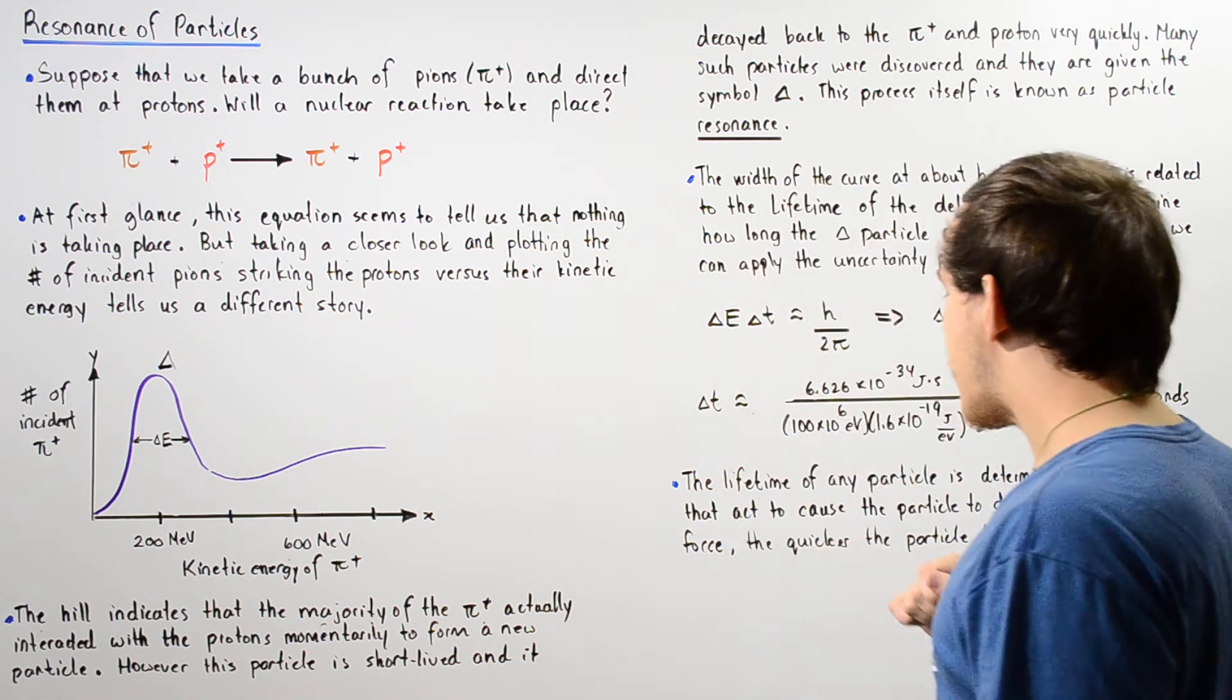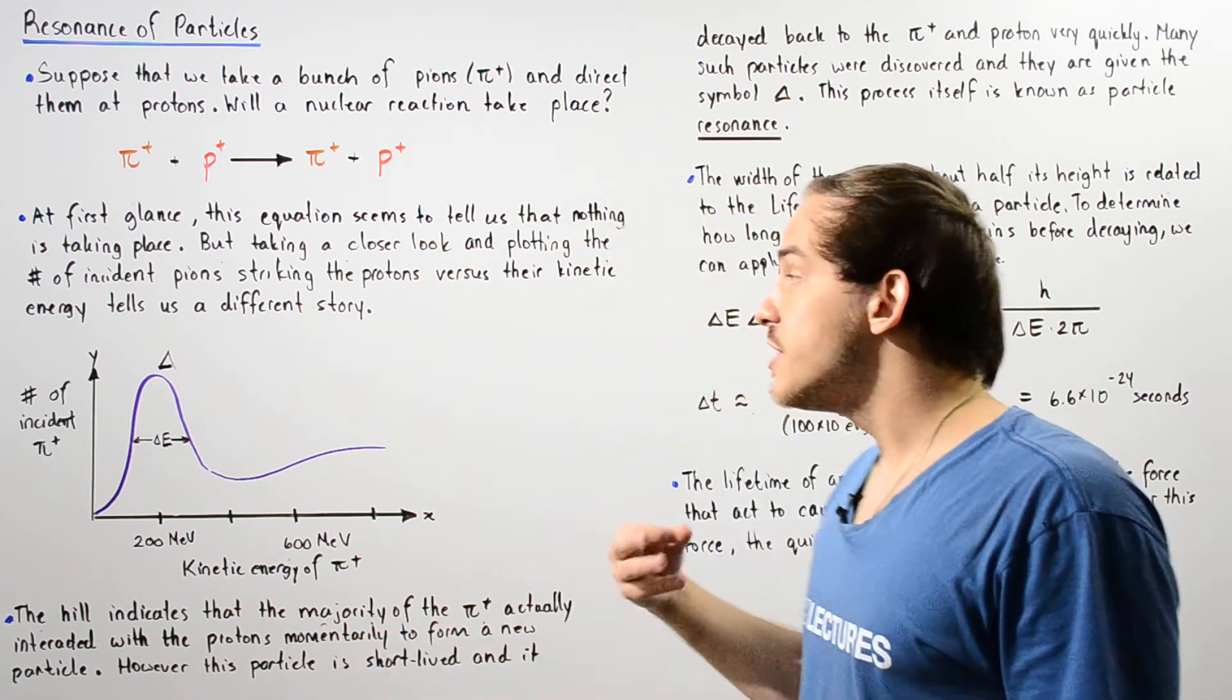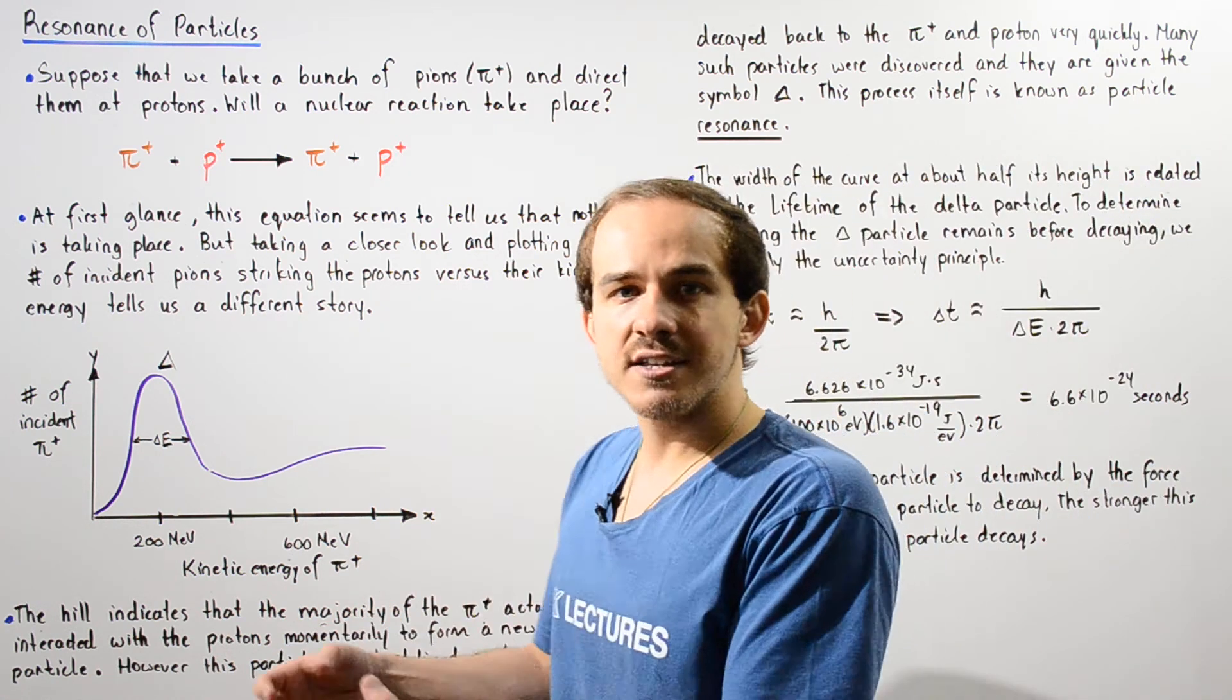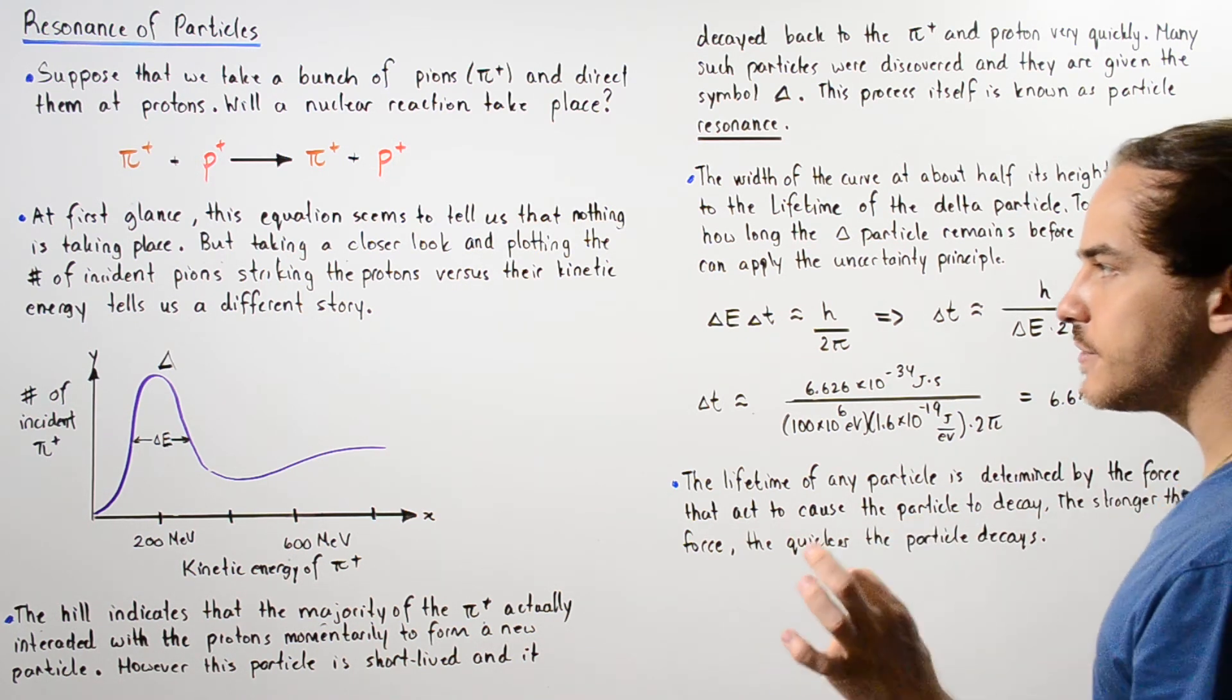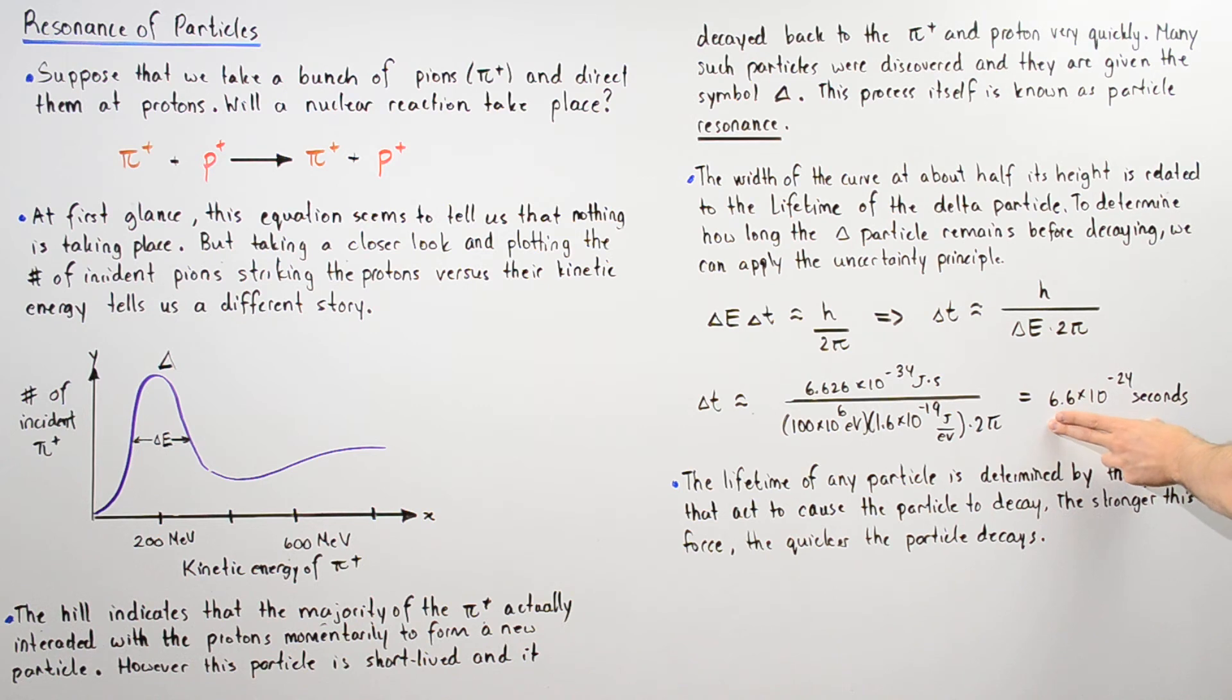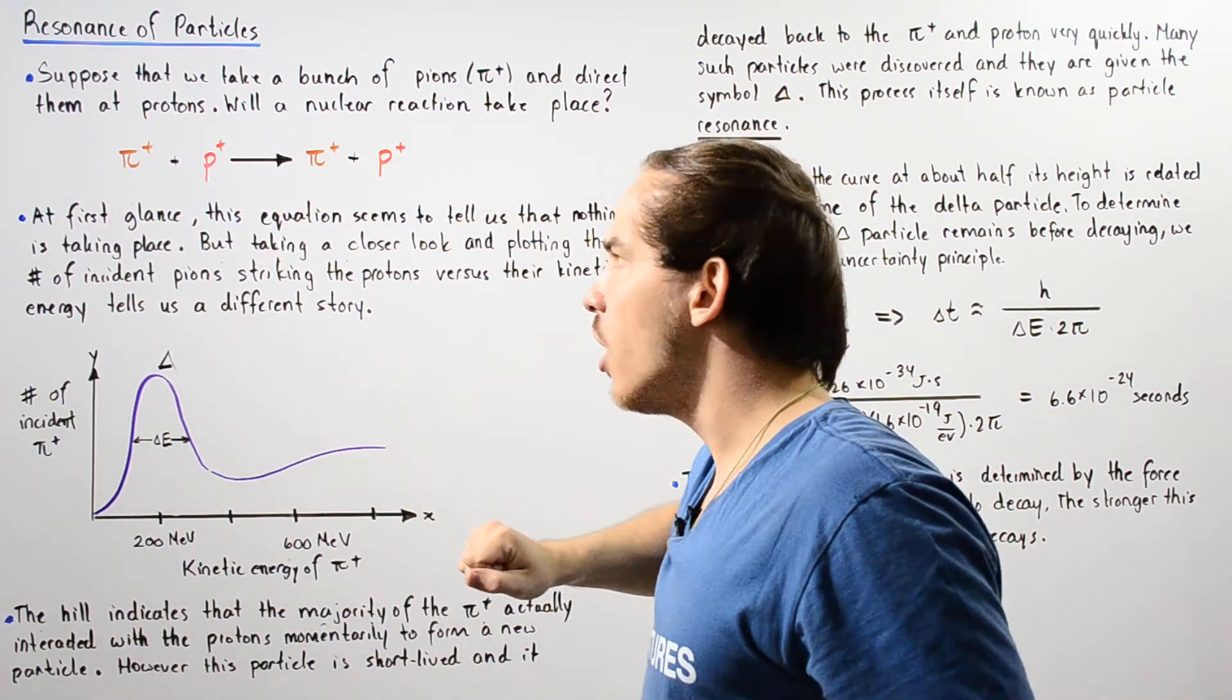So we see that the lifetime of any particle is determined by the force that causes or initiates that decay. Basically, if we have a very strong force such as the strong nuclear force that causes that decay, we see that this quantity will be very small. However, if the force is a weak force such as the weak nuclear force, we see that this will be smaller. Now in the case of this reaction, when these two particles combine to form the delta particle, we see the other protons in the picture...